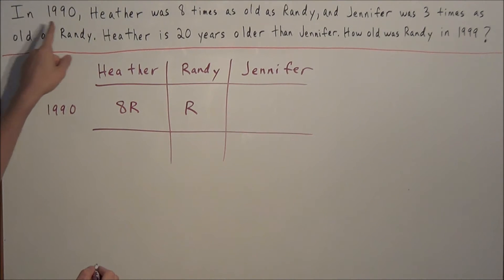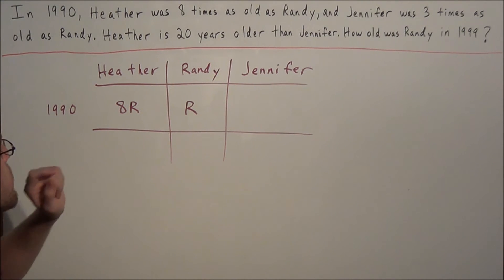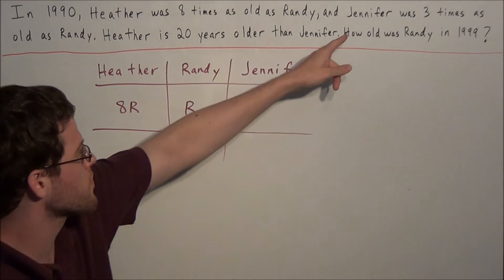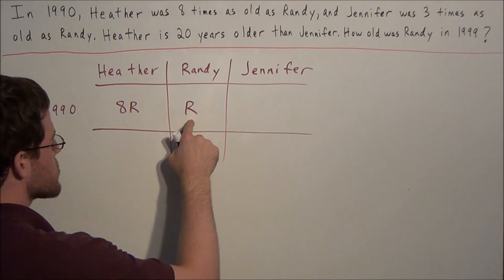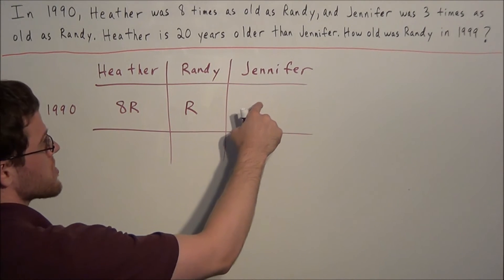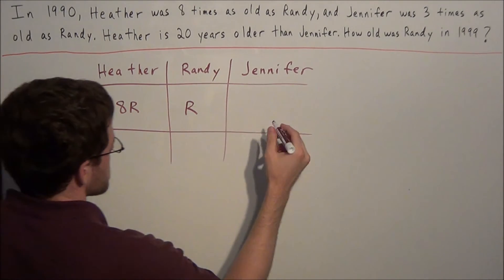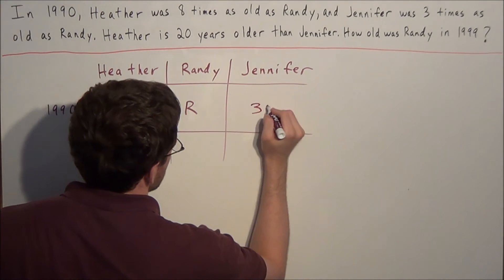And remember, once again, this is all going on in 1990. So by similar reasoning, we know that Jennifer was 3 times as old as Randy in 1990. So if Randy, once again, is r years old, then Jennifer is 3 times as old as Randy, so she's 3 times r, or 3r years old.